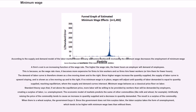If no minimum wage is in place, wages will adjust until quantity of labor demanded equals quantity supplied, reaching equilibrium where the supply and demand curves intersect. Minimum wage behaves as a classical price floor on labor. Standard theory says that if set above the equilibrium price, more labor will be supplied by workers than demanded by employers, creating a surplus of labor — i.e., unemployment. Since the government does not hire surplus labor, the labor surplus takes the form of unemployment, which tends to be higher with minimum wage laws than without them.